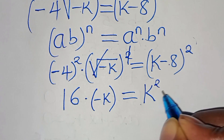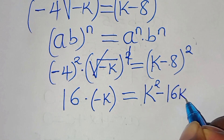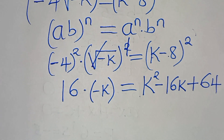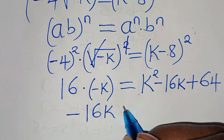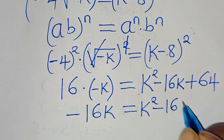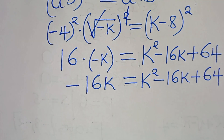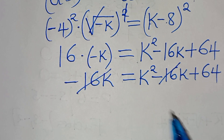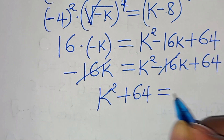This equals k minus 8 squared, which expands as k squared minus 16k plus 64. So we have minus 16k equals k squared minus 16k plus 64. The minus 16k on both sides cancels, so that we have k squared plus 64 equals 0.